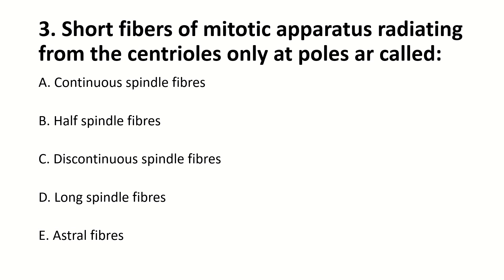Short fibers of the mitochondrial apparatus, arising from the cells only at poles, are called what? The right answer is E — Astral fibers.